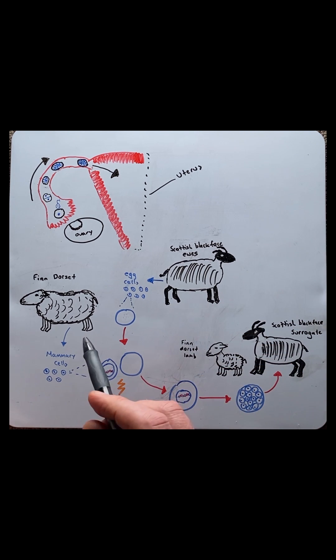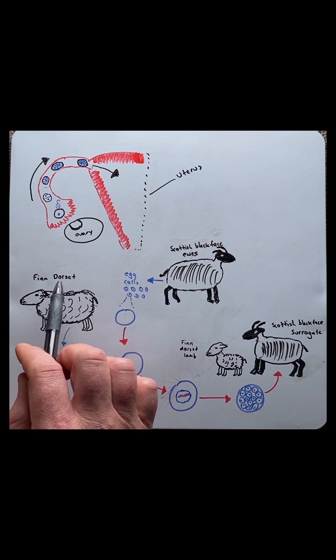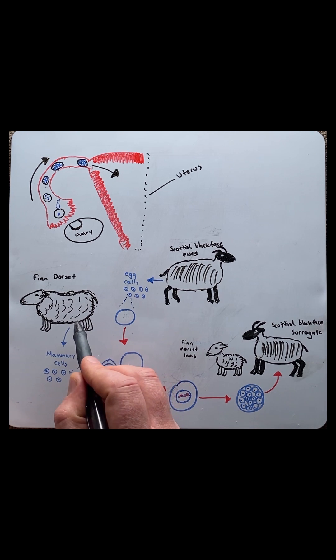The next step is to remove somatic cells from a different sheep species. In this case it's a Finn Dorset sheep. They extracted somatic cells from the mammary gland, which they then arrested or stopped the cell cycling.